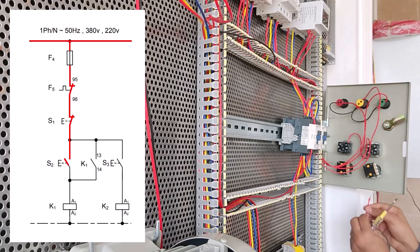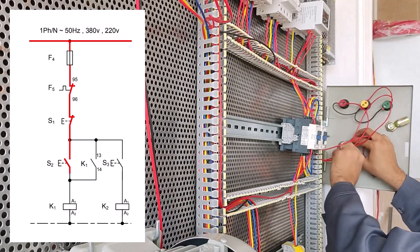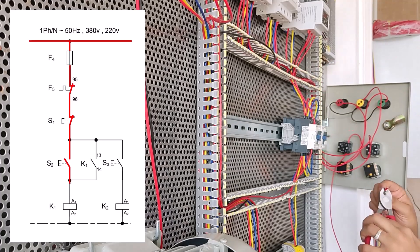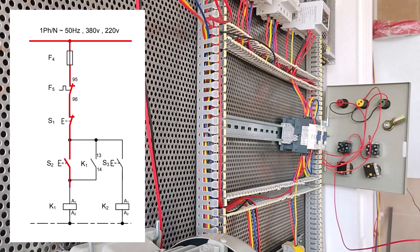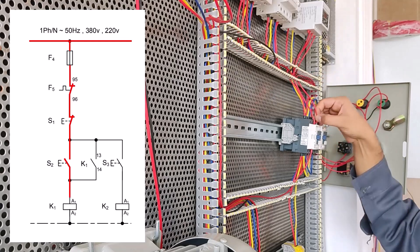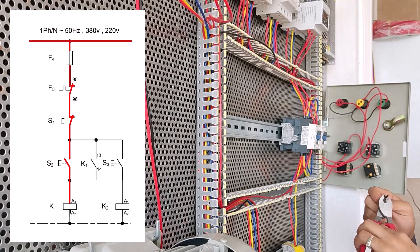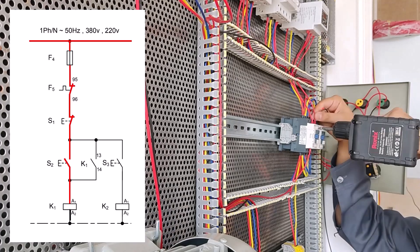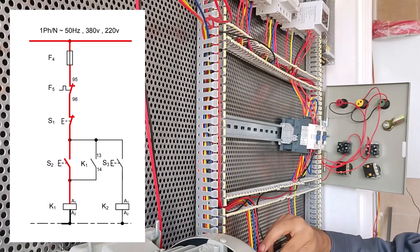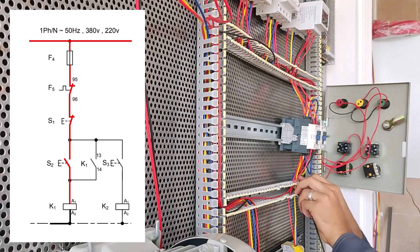Now we connect the conductor K1 from 14 start S2 to A1, as you can see in the map. And A2 is connected to zero with a black wire. You can see the black line in the map.